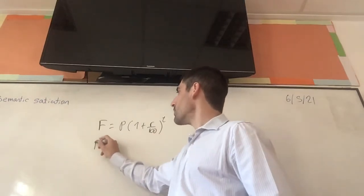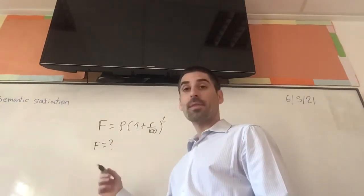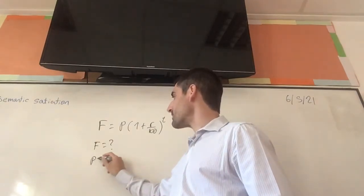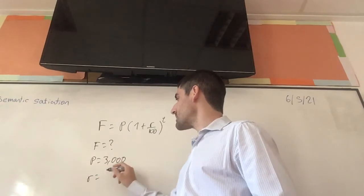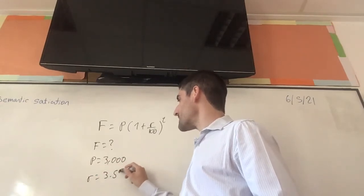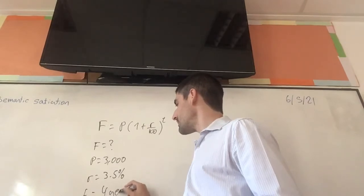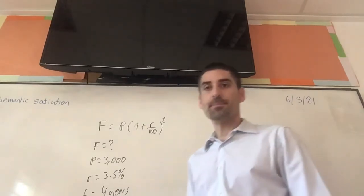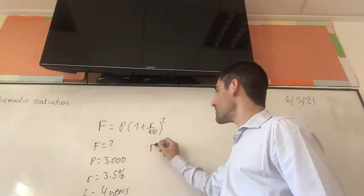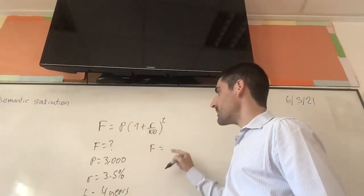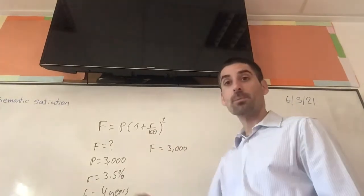A classic question: what's going to be the future value of three thousand pounds — that's my principal — at a rate of three point five percent over four years? All I have to do is put all these different values into my formula. The future value is going to be the principal, three thousand — that's how much money I'm putting into the bank now.